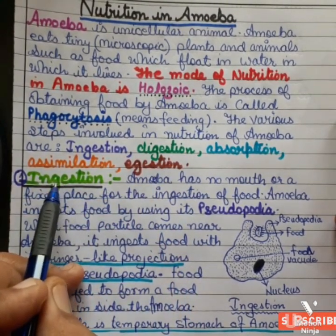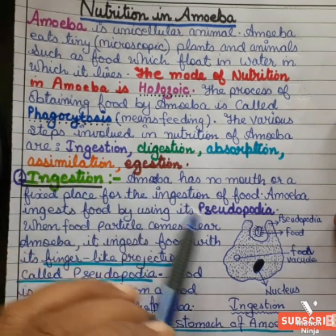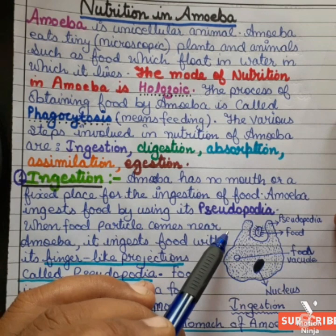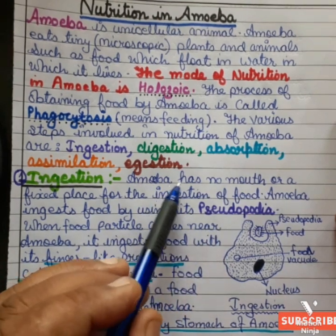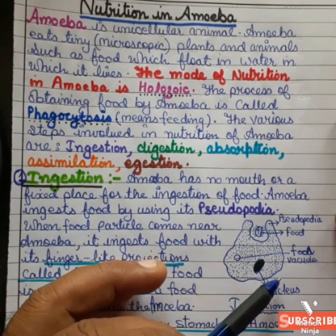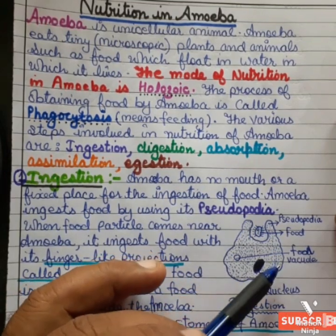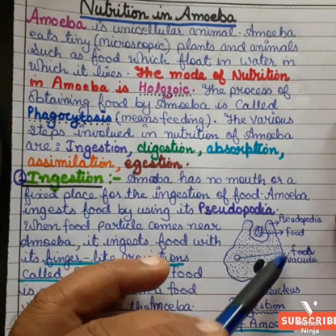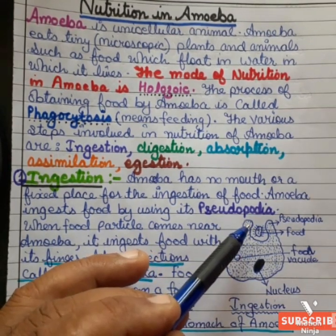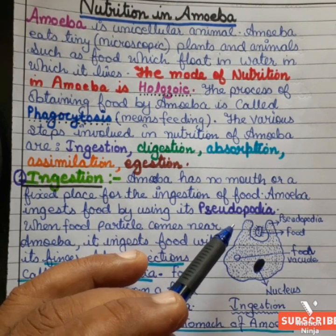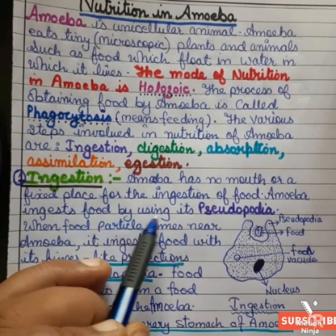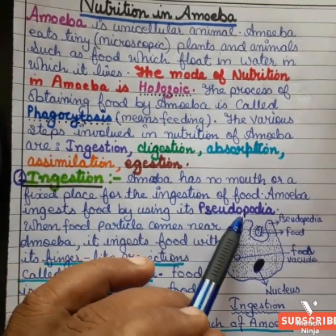First we will consider ingestion. This diagram shows ingestion. Amoeba has no mouth — it has an irregular shape and no fixed place for ingestion of food. Because it has no fixed place, amoeba ingests food by using pseudopodia.